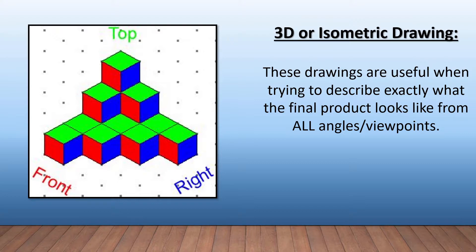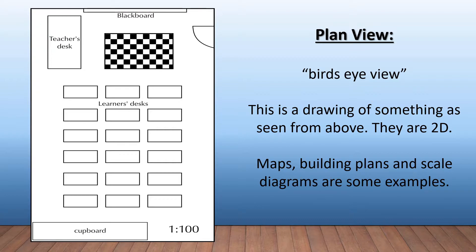Then we have drawings that come in a plan view. This is a bird's eye view — in other words, it's like looking at a classroom but you've taken the roof off and you're looking at it from above. These are two-dimensional drawings, and examples include things like maps, building plans, and scale diagrams.